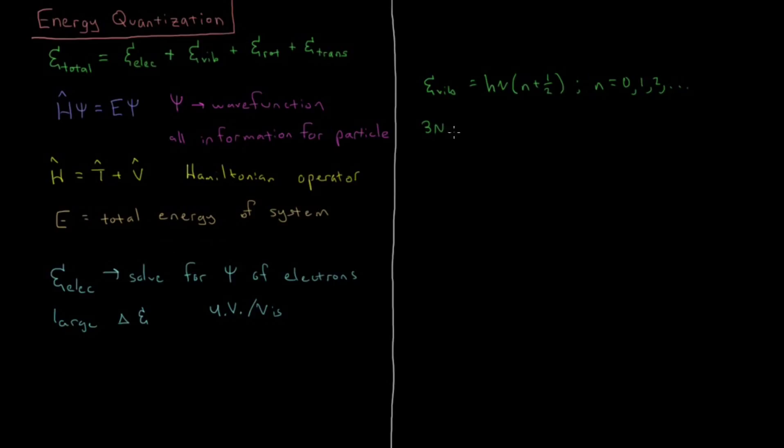So if I have four atoms in a molecule then there's going to be six vibrational modes and each will have their own quantum number and characteristic frequency.